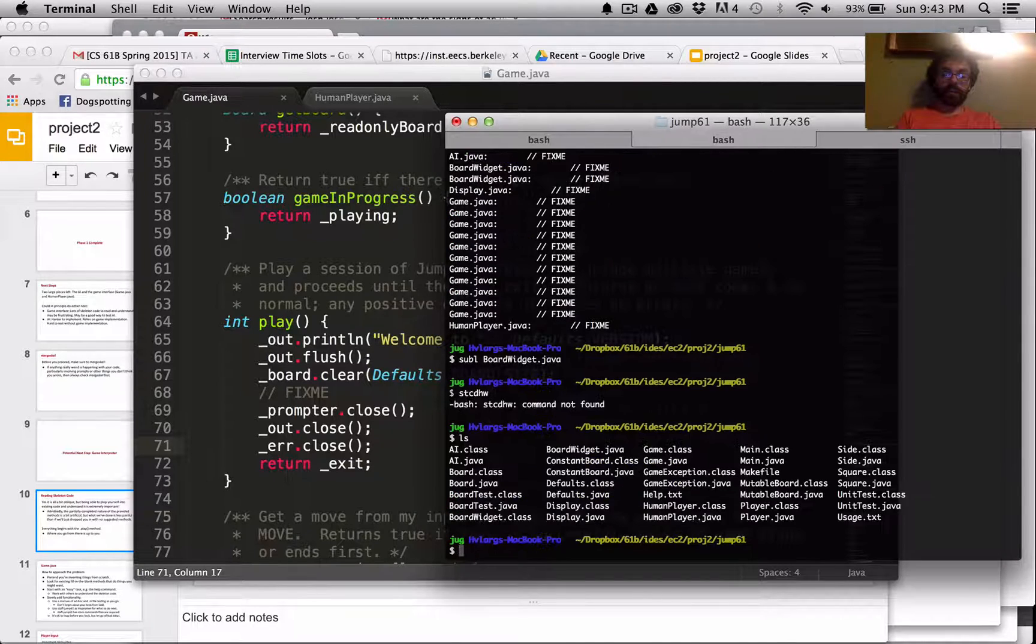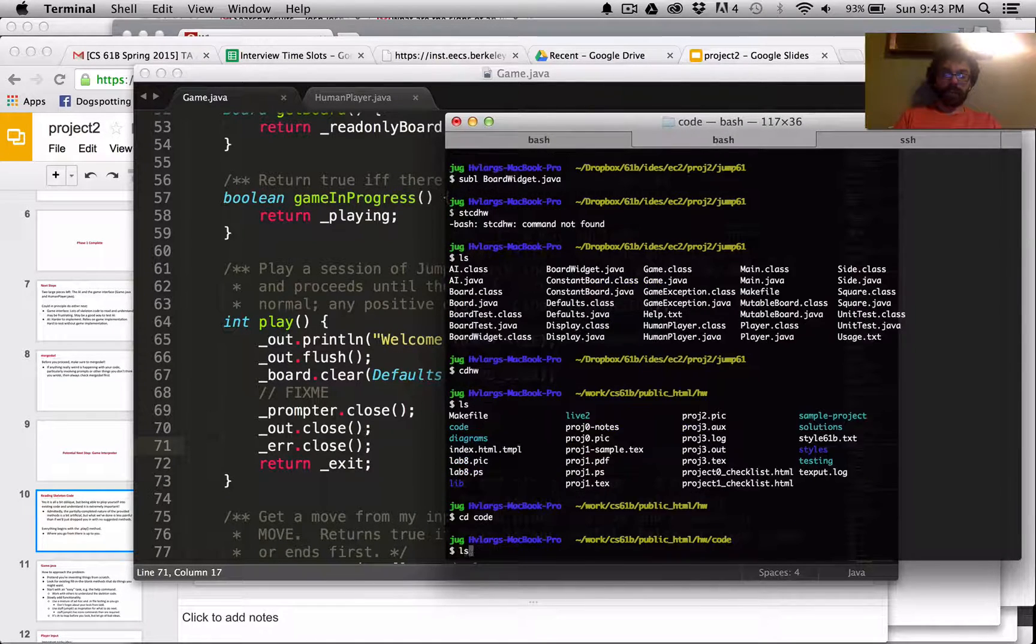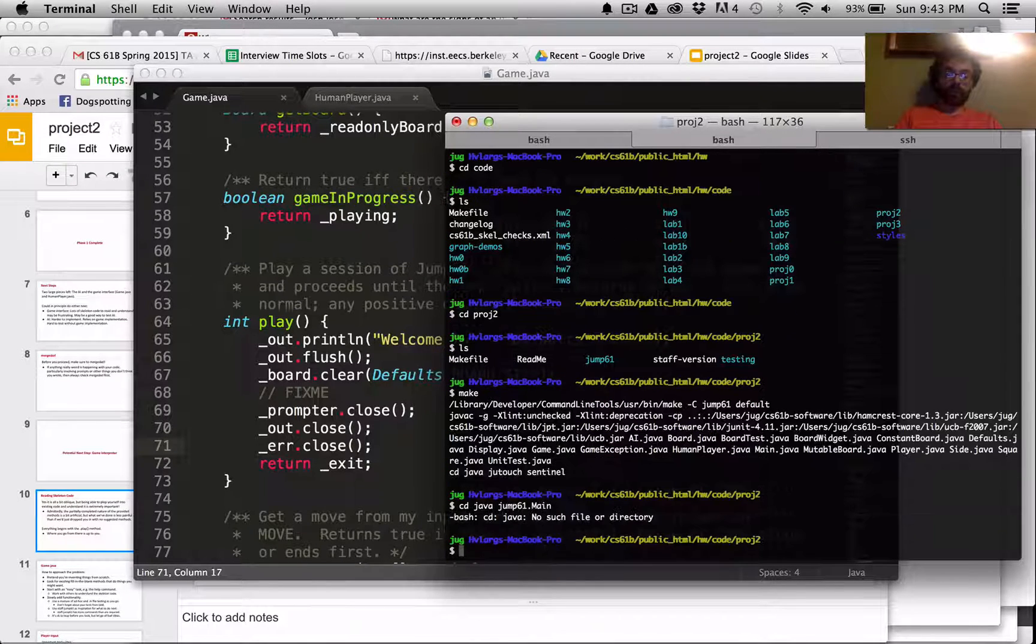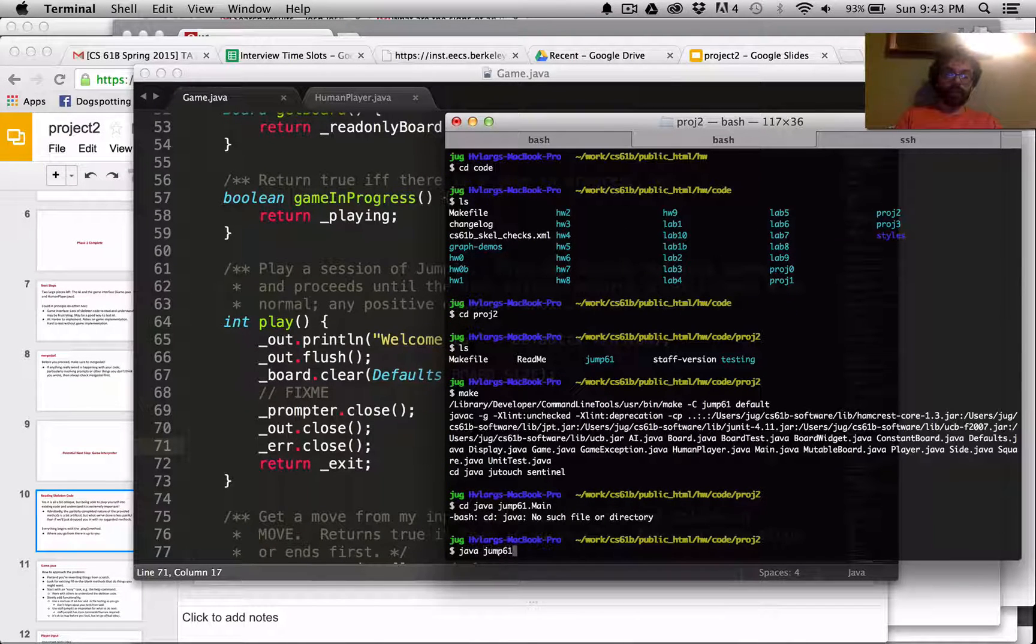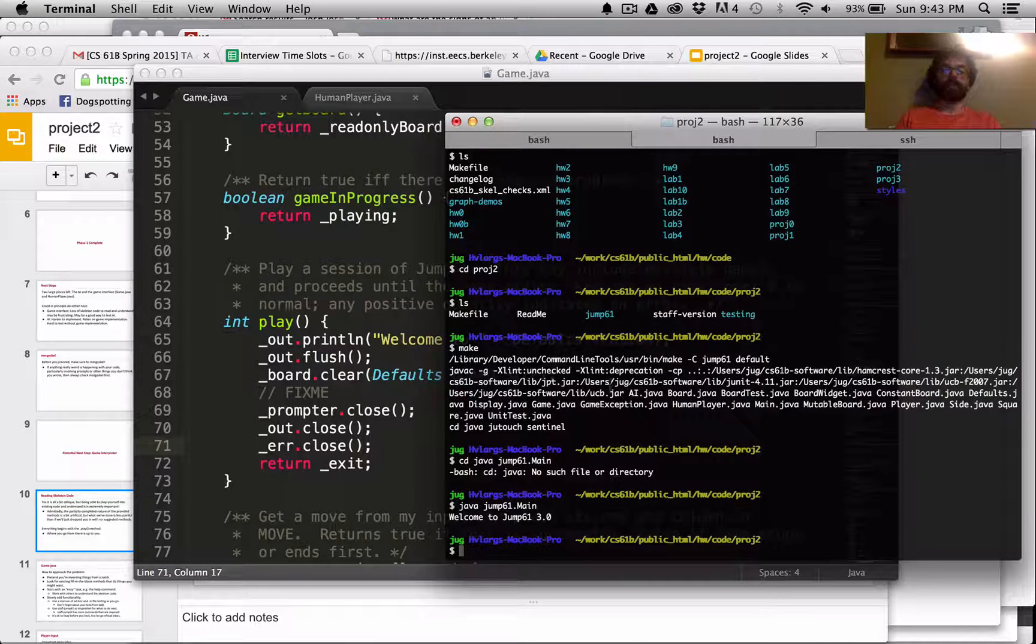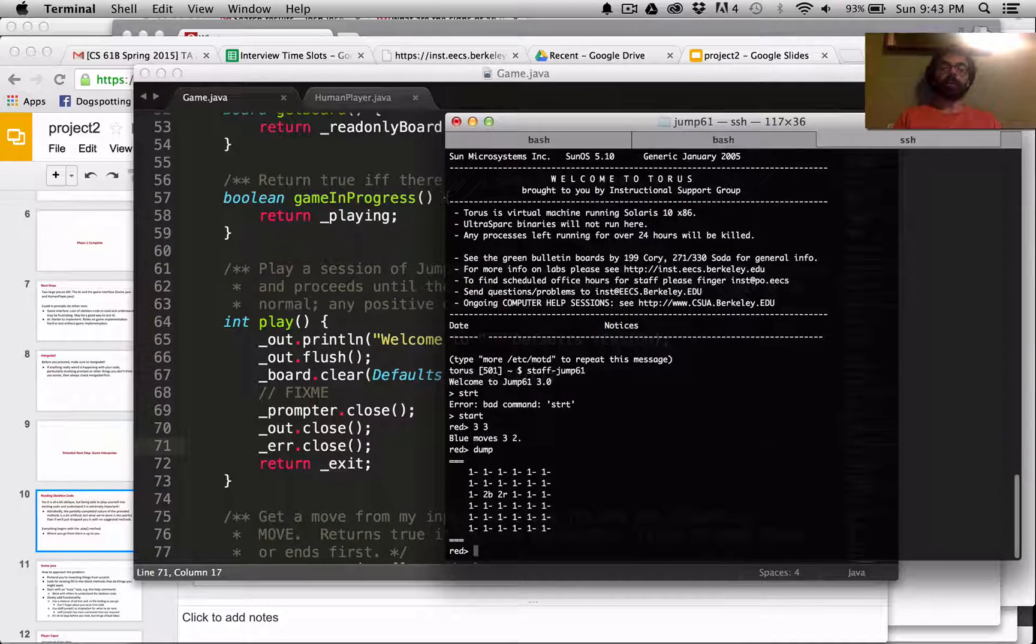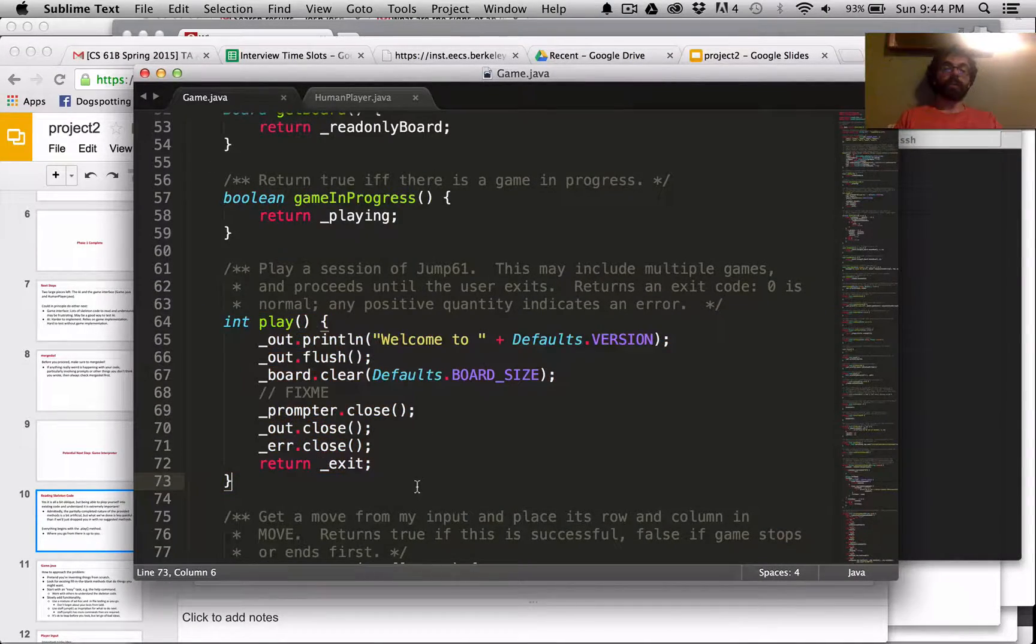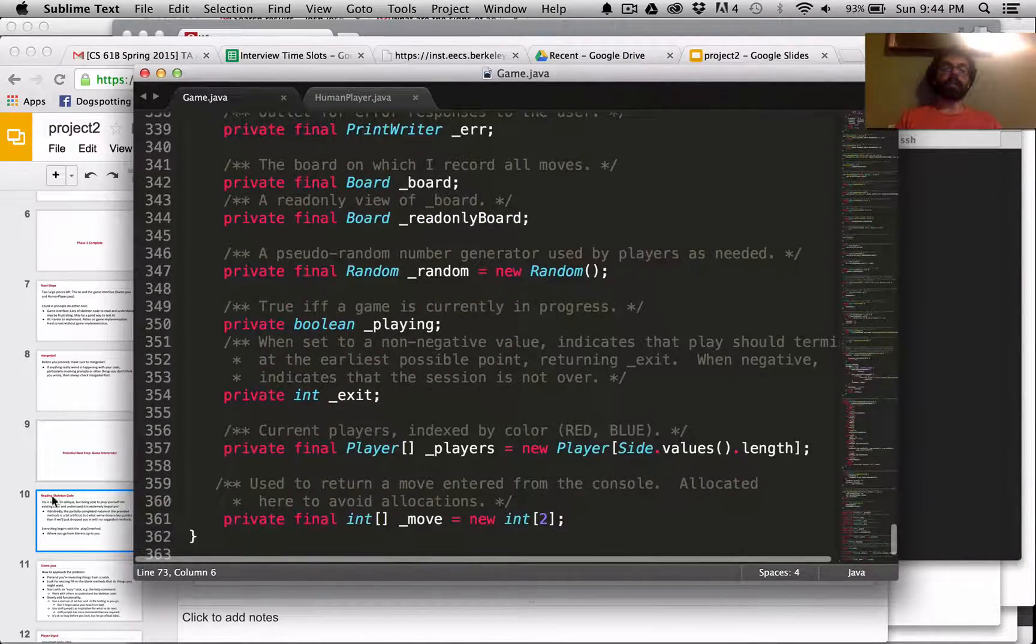So, this is where your code is going to start, and everything from there, if you actually try and run the code, we run it, and instead of doing anything, it just says, welcome to jump 61, compared to what we expect over here. So, it's going to be up to you to decide what to do next, using all these little pieces that we've given you.